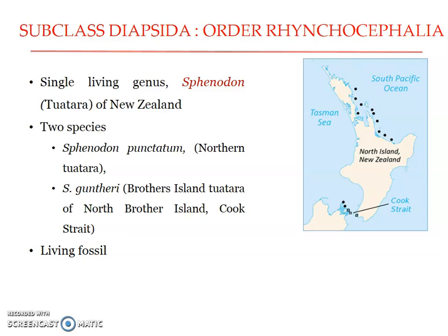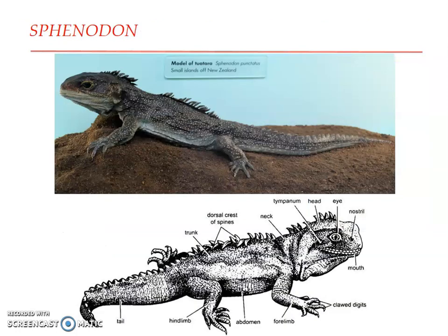Sphenodon has remained unchanged for about 200 million years, persisting as a primitive living fossil showing the condition of diapsids of the late Permian period. This picture shows the Sphenodon and the labeled diagram underneath. Sphenodon inhabits burrows made in soft soil and in rocks and is often found associated with petrels, with nocturnal habits.